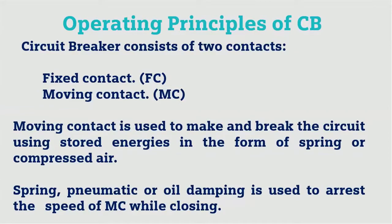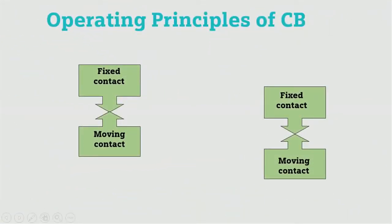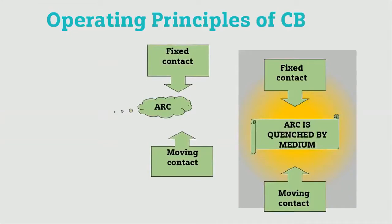The circuit breaker consists of two contacts: fixed contacts and moving contacts. The moving contact is used to make and break the circuit using stored energy in the form of a spring or compressed air. Spring, pneumatic, or oil damping is used to control the speed of the moving contact while closing. When a fault occurs, the circuit breaker breaks the contact and an arc is produced.